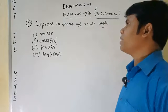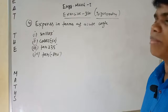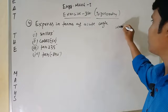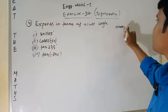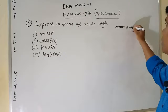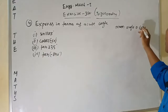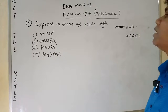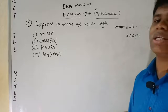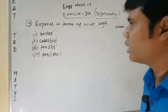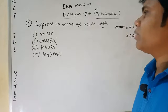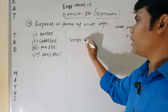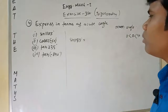The question is: express in terms of acute angle. Acute angle means the angle lies between 0 to 90 degrees — that is, 0 < θ < 90. If the angle lies between 0 to 90 we can say that the angle is an acute angle. Here, given sin(1185°), we can express it into an acute angle.